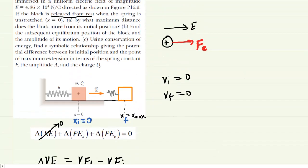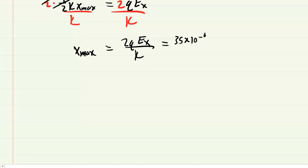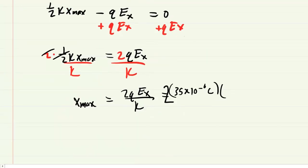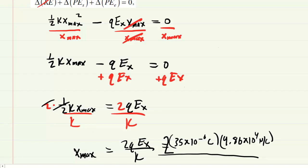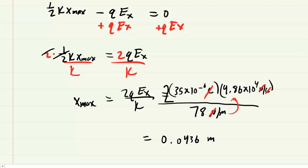Now we plug in the known values. The charge Q is 35 microcoulombs, so 35 times 10 to the minus sixth coulombs. Let's not forget the factor of two out front. We multiply by the electric field strength of 4.86 times 10 to the fourth newtons per coulomb, then divide by the spring constant k of 78 newtons per meter. Crunching the numbers gives approximately 0.0436 meters, or 4.36 centimeters. Either is an equivalently correct answer for Part A.